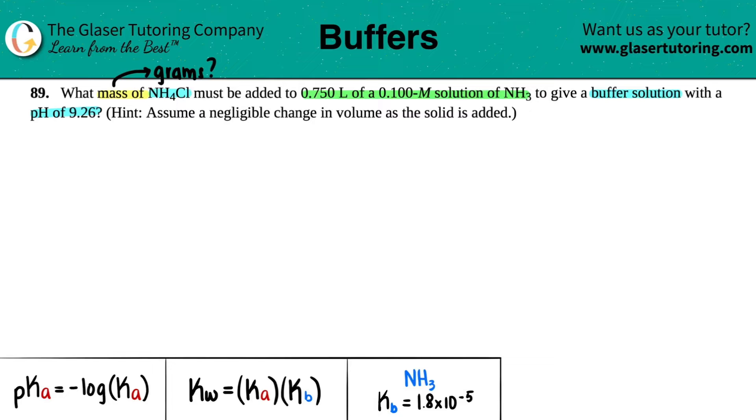The first couple things I notice is that we have a buffer solution and they give us a pH. When dealing with buffers, especially if they give us a pH or we're looking for a pH, the easiest way to solve this is using the Henderson-Hasselbalch equation. No need to do a balanced equation here.